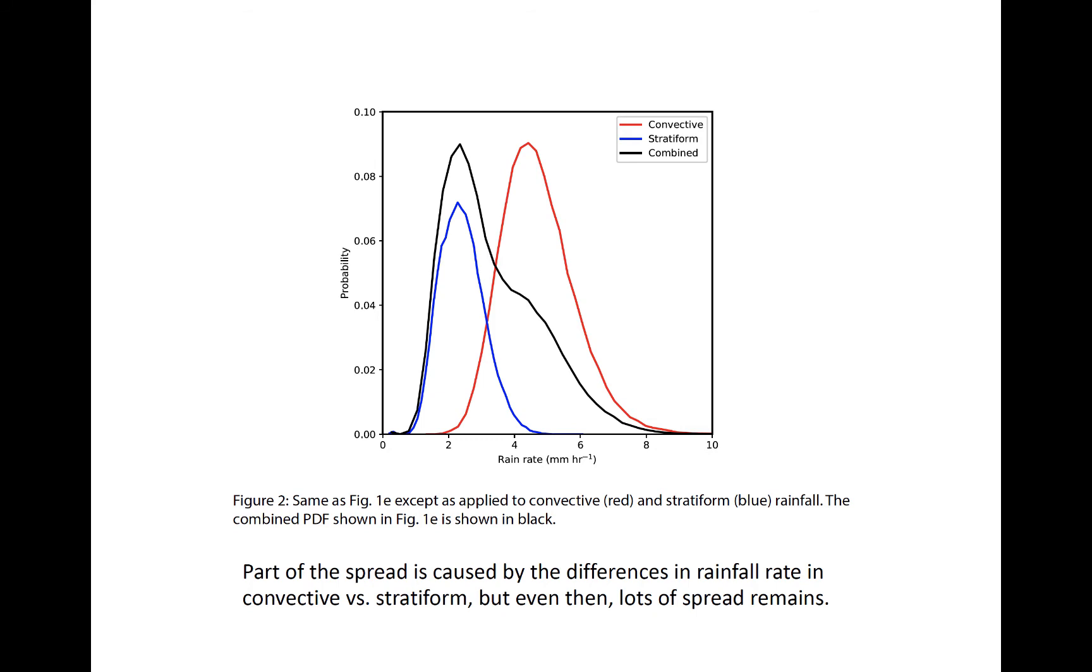When we compute rain rate PDFs for the 30 to 31 dBZ bin separately for convective and stratiform precipitation, we get two very different distributions that only overlap at their tails.